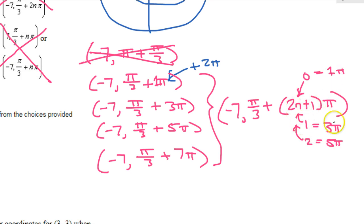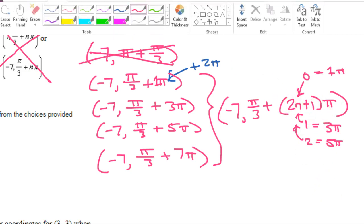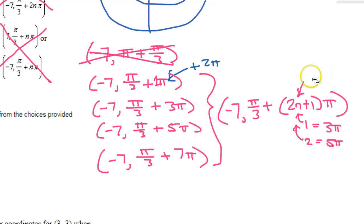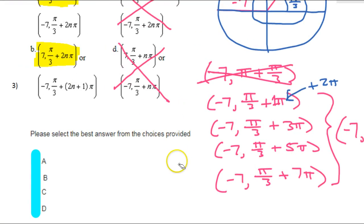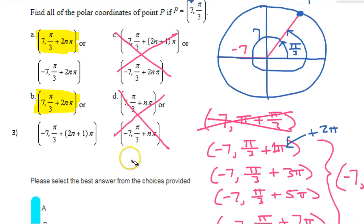So, by using the expression 2n plus 1, this will give you 1, 3, 5, 7, 9, etc. It gives you odd numbers. So, any time you see that the pattern is all odd numbers, you can go ahead and use the expression 2n plus 1 to represent all the odd numbers. And that's what we have here, odd numbers. So, that's 2n plus 1 pi.